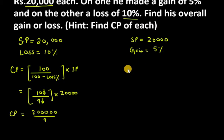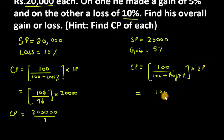So gain is 5%. Which is the cost price formula? The formula is 100 over (100 plus gain percent), or profit percent, multiplied by selling price.